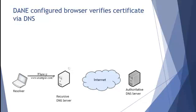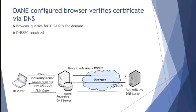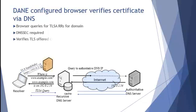With a DANE-configured browser, the process ensues where I look up the IP address once again, get the IP address, and then also query for the TLSA information. That's DNSSEC-signed, so I can validate that it was published by the domain administrator. Now when I attempt to make the connection, if there is a man in the middle, I'm getting back TLS information that doesn't match what's in the TLSA, and I can thereby reject that connection as bogus. TLSA gives me a great way to really corroborate the certificate information that the browser should be getting back from the web server.